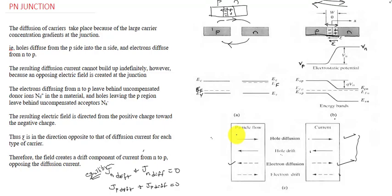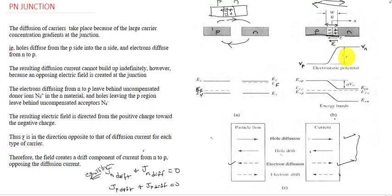In this module, we are going to study the basic concept of the PN junction, understand the energy band diagram of the PN junction, and derive expressions for the width W, the electric field at the junction, and the contact potential at the junction. Due to the electrostatic potential across the junction, we can measure a contact potential V0, defined as VN minus VP, where VN is the electrostatic potential on the N-side and VP is the electrostatic potential on the P-side. This is also known as the built-in voltage.